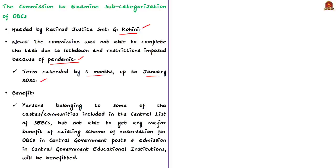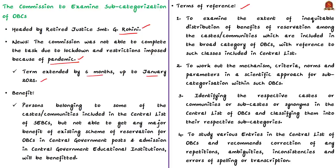Let us see the objectives of the commission based on its terms of reference. This commission aims to examine the extent of inequitable, that is unfair, distribution of benefits of reservation among the castes and communities involved in the broad category of Other Backward Classes. This will be done with reference to such classes included in the central list. The commission also aims to work out the mechanism, criteria, norms, and parameters in a scientific approach for sub-categorization within OBCs.